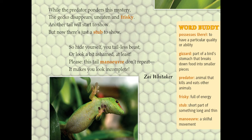While the predator ponders this mystery — 'ponders' means to think about something carefully for a long time — if the lizard is on the wall and wants to eat something, it will be moving gradually at first, then suddenly catch the insect. This is what makes the gecko such a clever and skillful animal. The gecko disappears uneaten and frisky — 'frisky' means full of energy. Another tail will start to grow, but now there is just a stub to show.